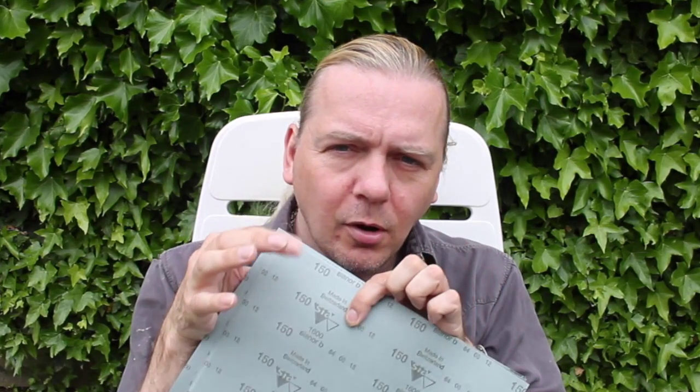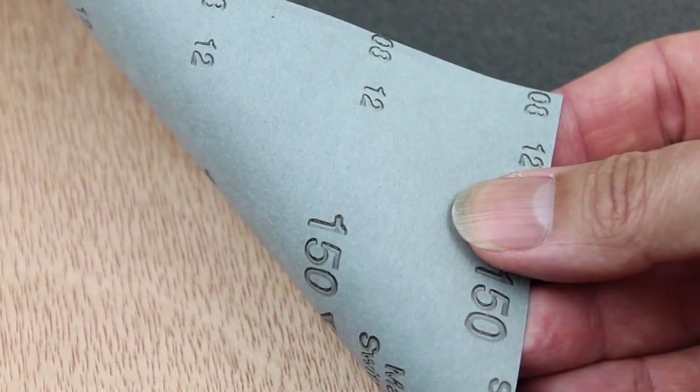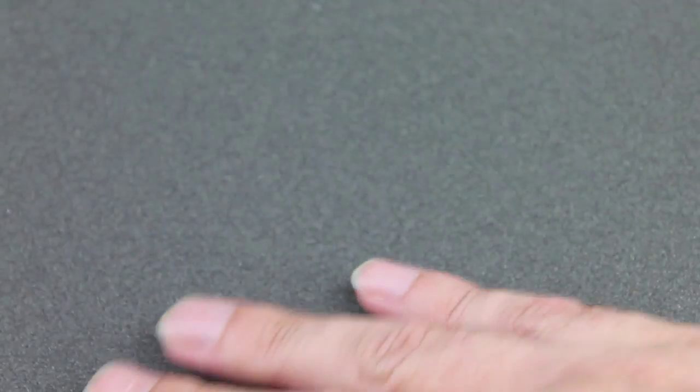So today I'm going to show you how to make some buff sticks, some tricks and techniques, and I will also explain what all these funny numbers mean on the back. Emery paper is sheets of strong paper with one side coated with emery particles which are glued to the surface.